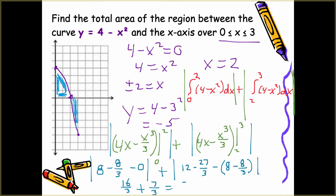Adding 16 thirds and 7 thirds, we get 23 over 3. That is the total area. Notice if we didn't take the absolute values, we would have had negative 7 thirds for the area under the x-axis. But taking the absolute value makes it positive 7 thirds, and when we add them together we get 23 thirds. That is how we find the total area under a curve — not the net area.